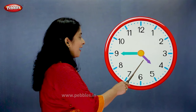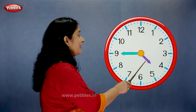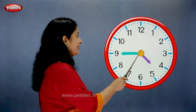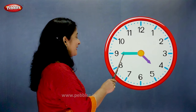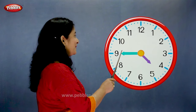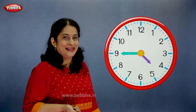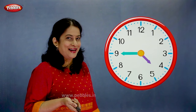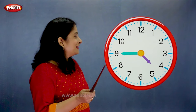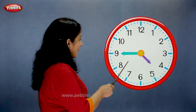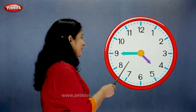The hour hand is moving towards 5. The minute hand is on 9. So what is the time? Come on, tell me fast. Correct — the time is quarter to 5.